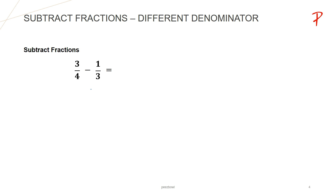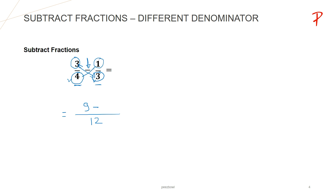There is one more way to subtract fractions, and that is applicable when we have two fractions, like in this case 3 upon 4 and 1 upon 3. At the denominator's place, we are going to multiply both the denominators, that is 12. And for the numerator, I am going to multiply the first fraction's numerator with the second fraction's denominator — 3 multiplied by 3 is 9. Then we have a minus symbol, and we multiply the second fraction's numerator with the first fraction's denominator — 1 multiplied by 4 is 4.